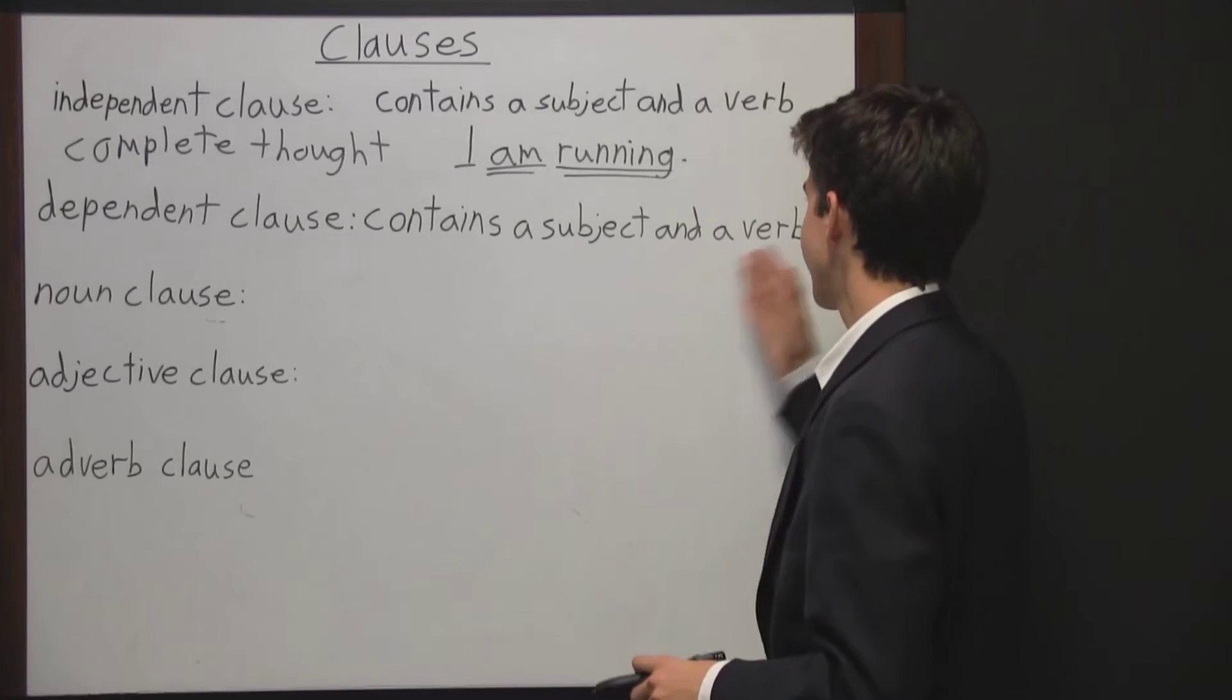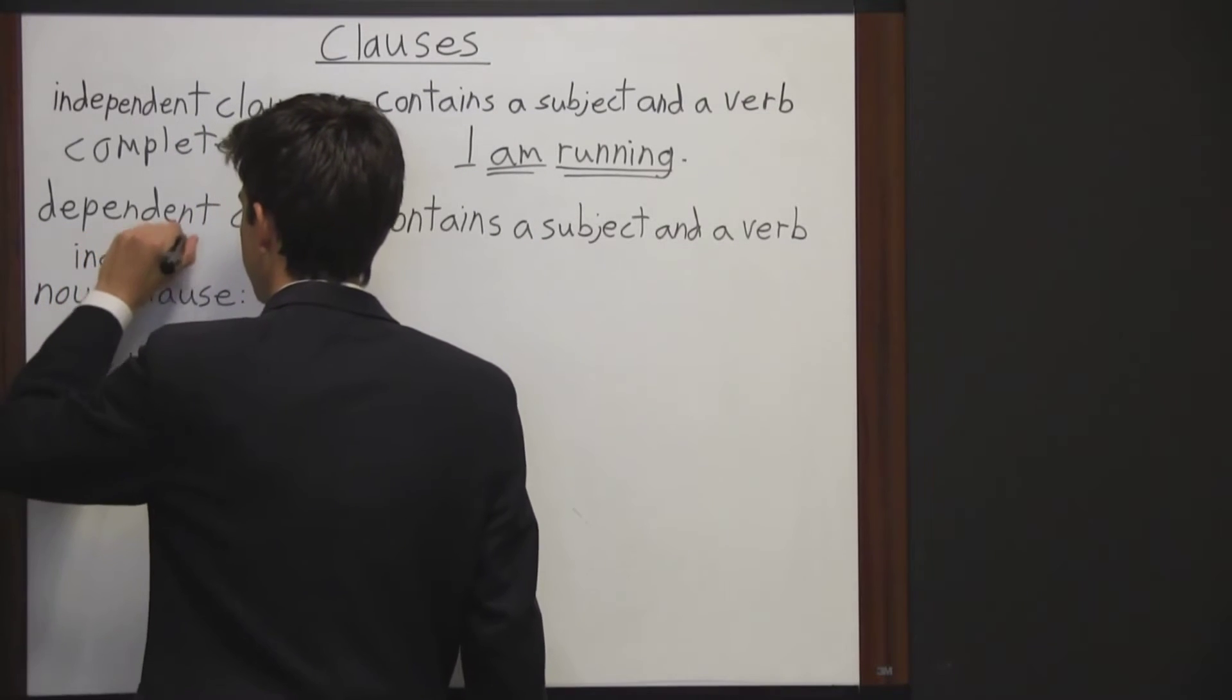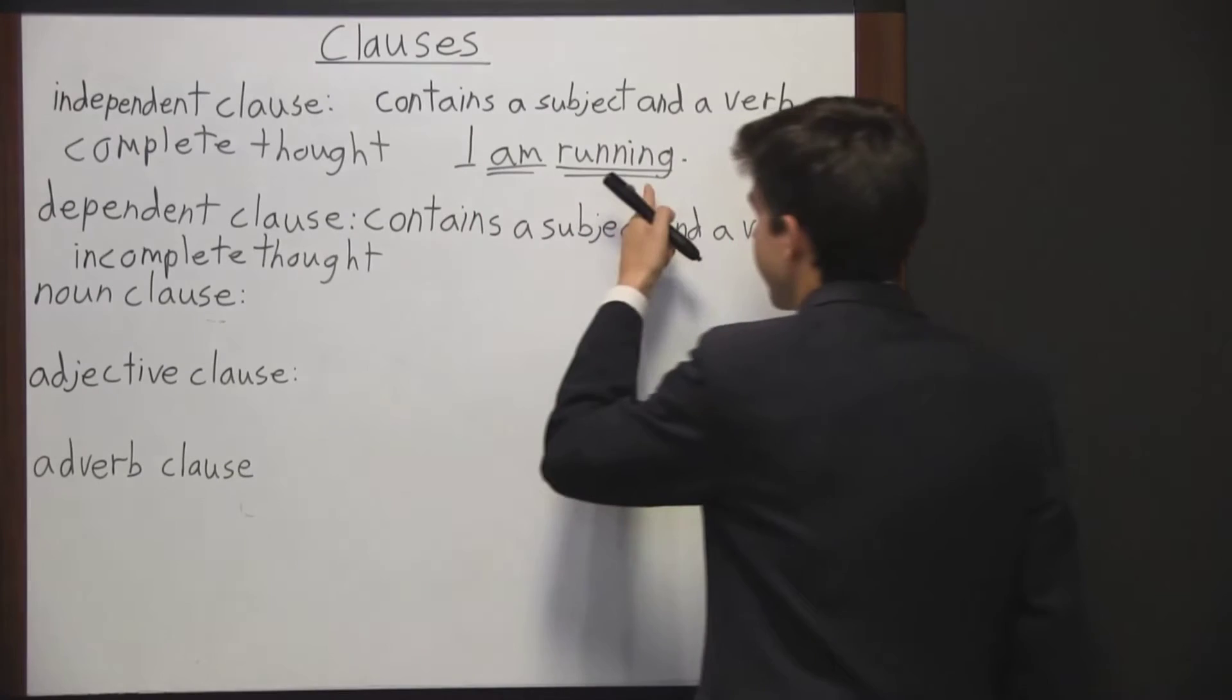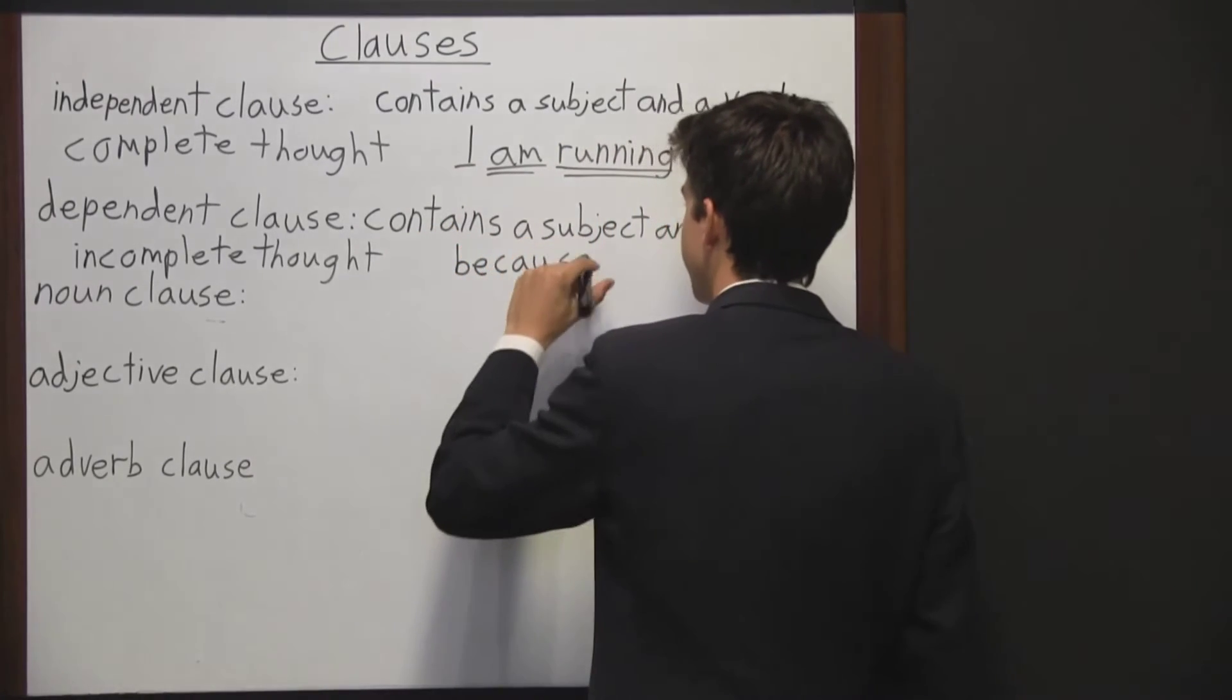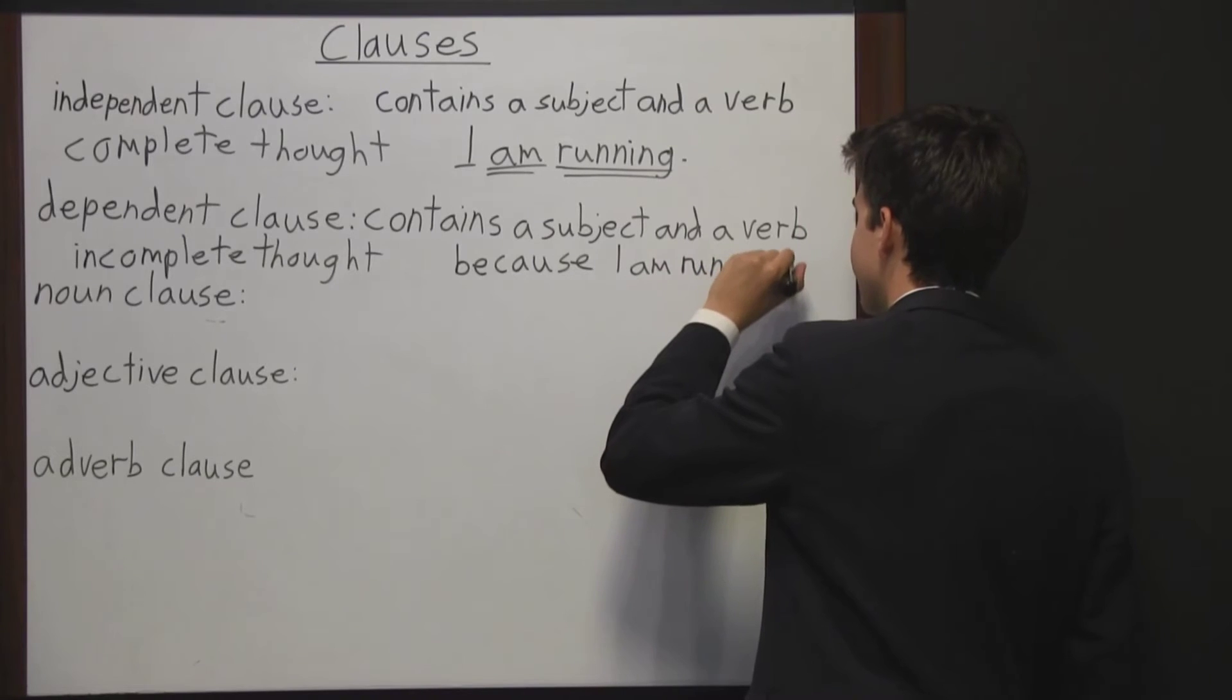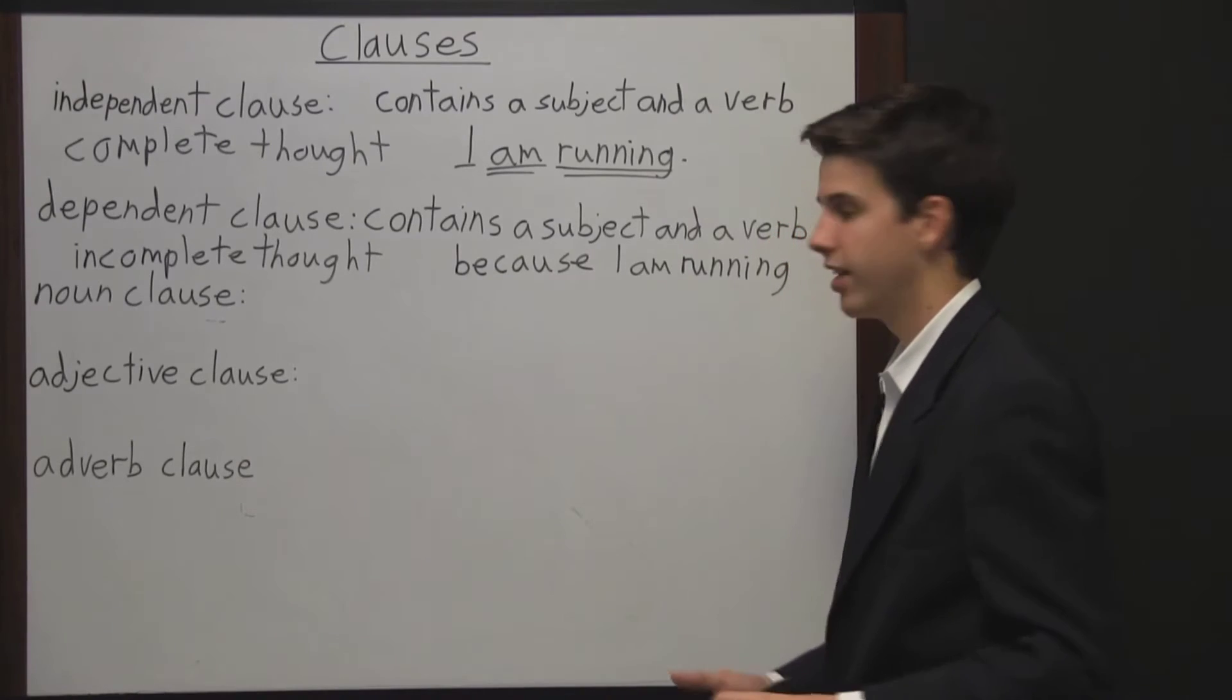Now a dependent clause also contains a subject and verb. However, it is an incomplete thought. And so we can take this independent clause up here and just add the word because to it, and it becomes a dependent clause. Because I am running still has a subject and a verb, but now we have the word because, and so it's a dependent clause.